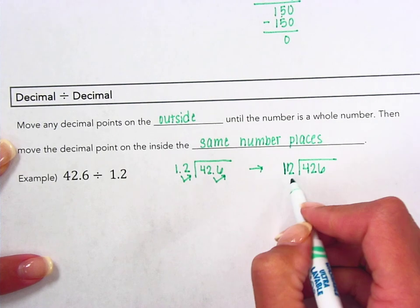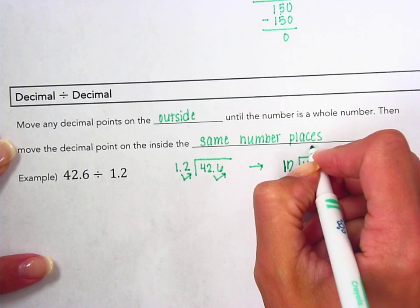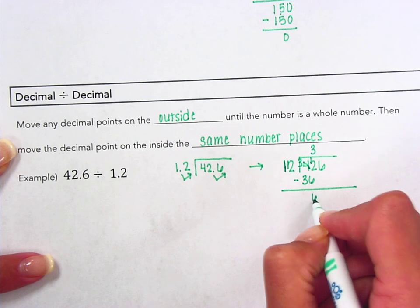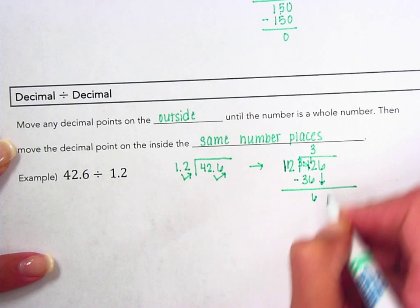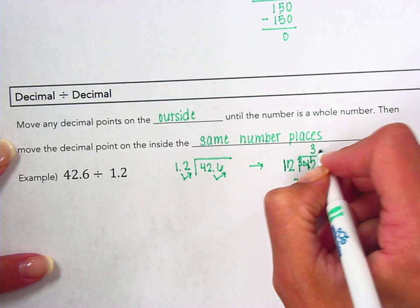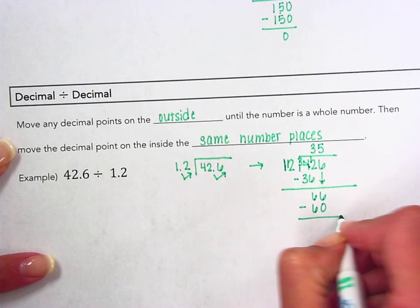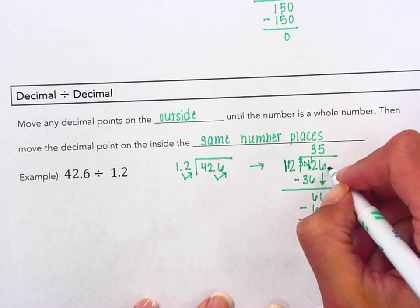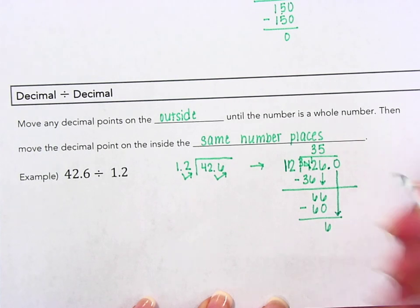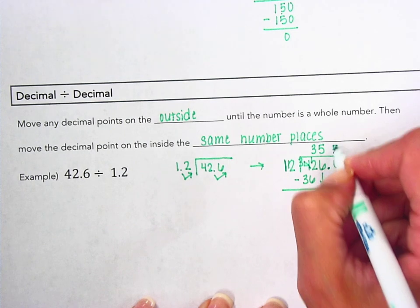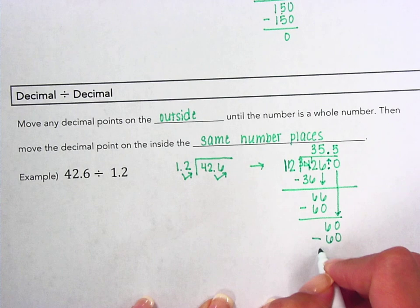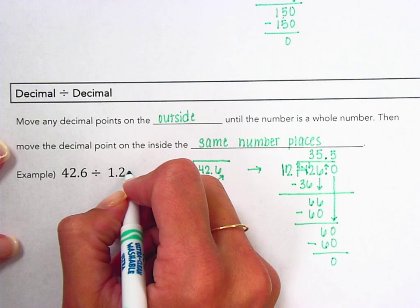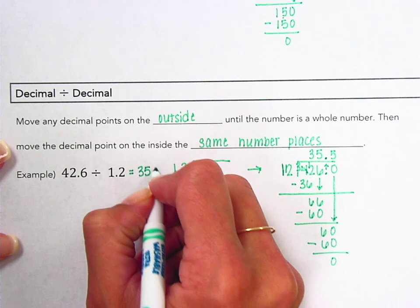Now we can start dividing. Twelve cannot go into four, but it can go into forty-two three times. Twelve times three is thirty-six. Twelve minus six is six. Twelve can't go into six, so we bring down our next digit. Twelve can go into sixty-six five times; twelve times five is sixty, and we're left with a remainder of six. Since we have no more digits to bring down but have a remainder, we add a decimal and a zero, bring down that zero, and twelve goes into sixty five times. We move the decimal point straight up; twelve times five is sixty. With a remainder of zero and no more digits, we're done. So forty-two and six tenths divided by one and two tenths is equal to thirty-five and five tenths.